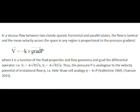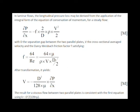In a viscous flow between two closely spaced horizontal parallel plates, the flow is laminar and the mean velocity across the space in any region is proportional to the pressure gradient. The pressure is analogous to a velocity potential for an irrotational flow motion. In laminar flow, the longitudinal pressure loss may be derived from the application of the integral form of the equation of conservation of momentum for steady flow.